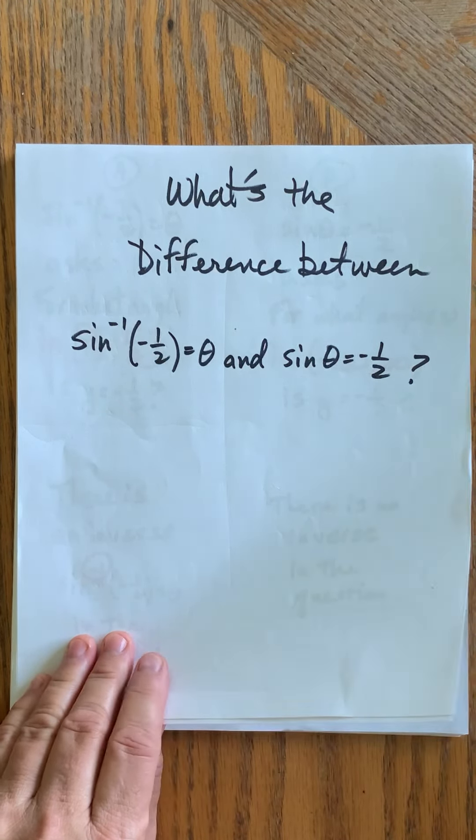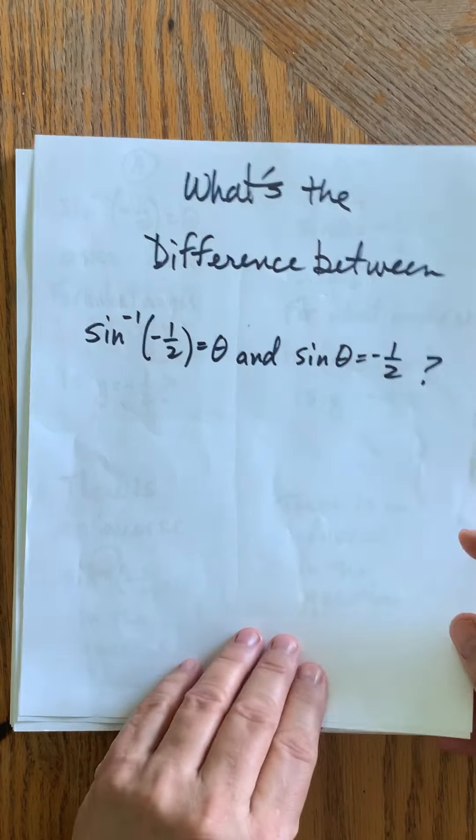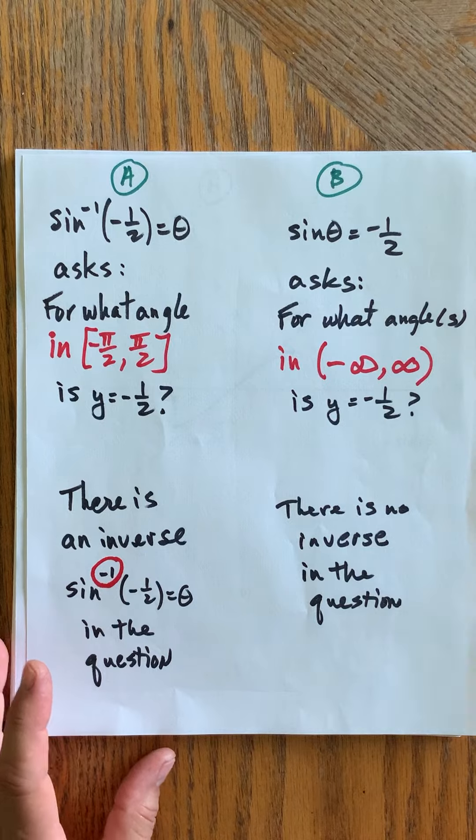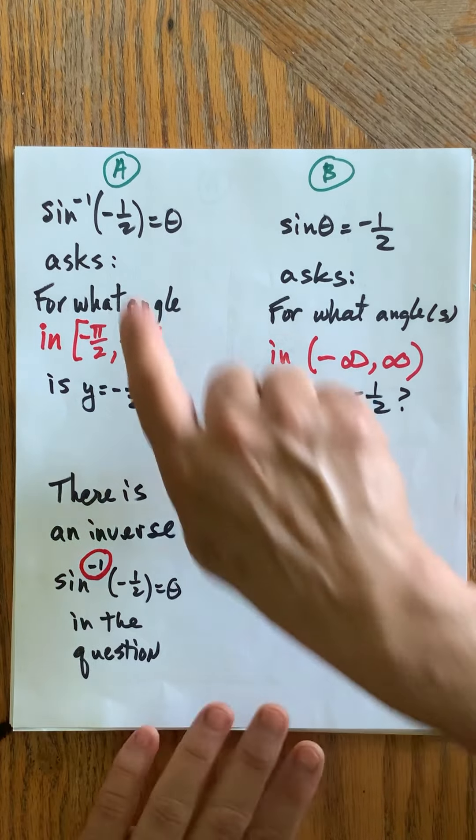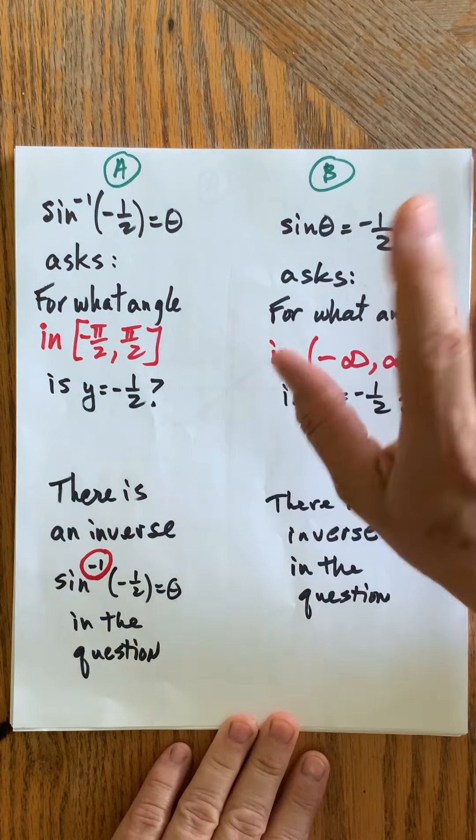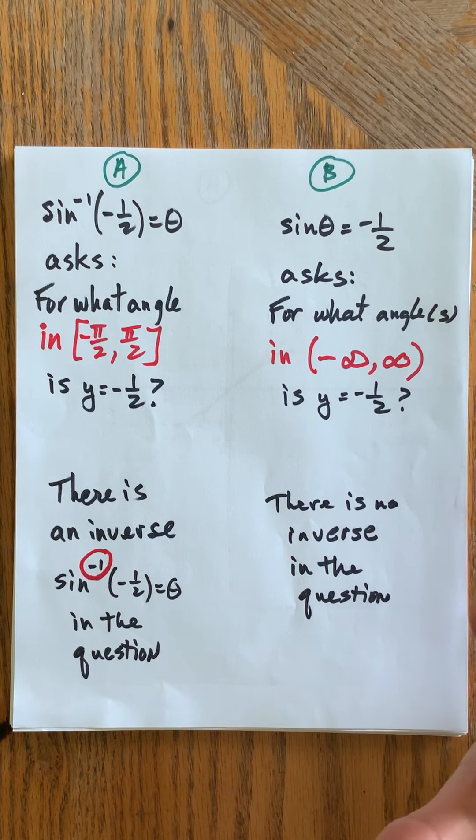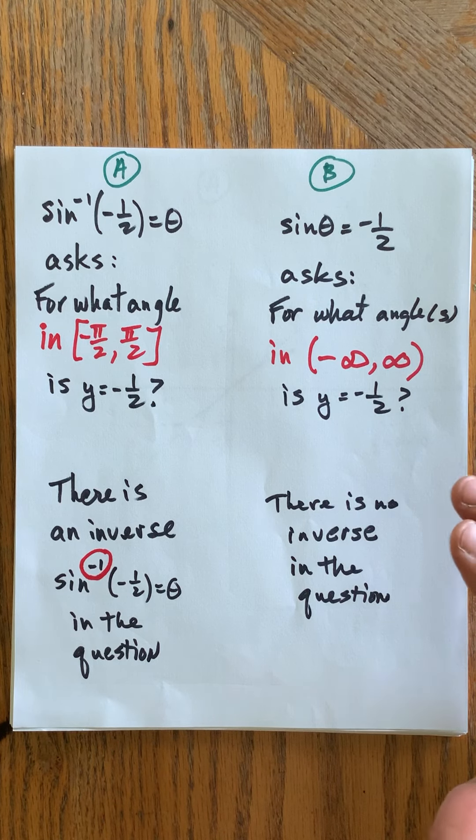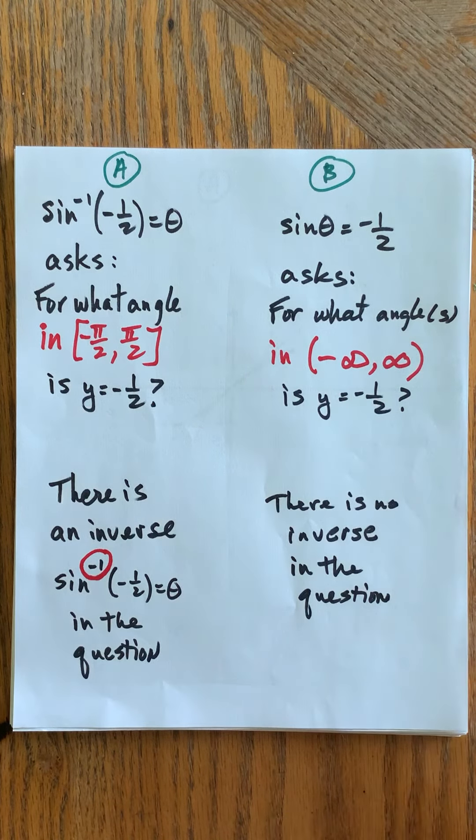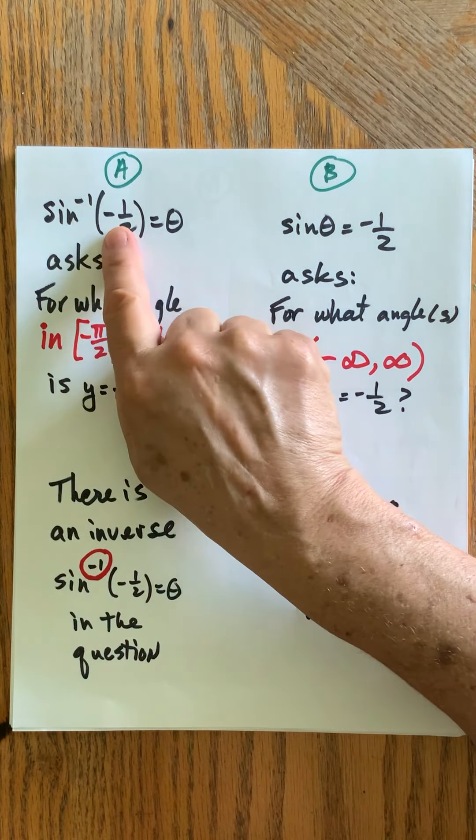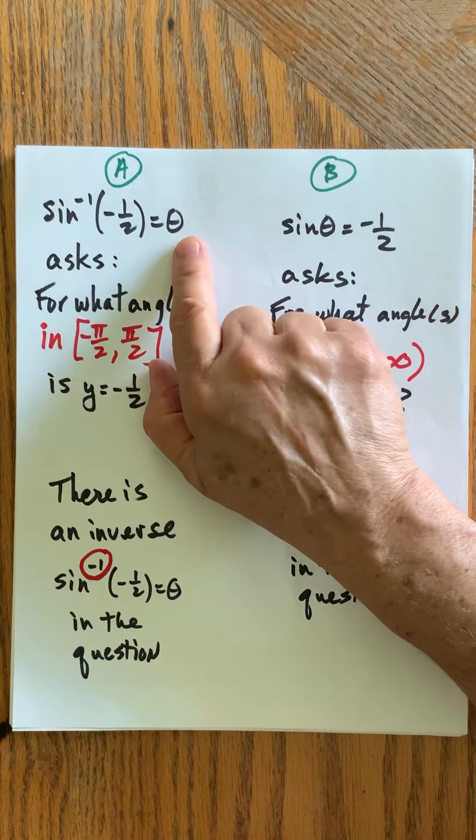So what is the difference? I'm labeling them A and B, so A is the inverse question and B is the equation. If you look back at the videos, when you're first introduced to inverses, I ask you to translate the question into a verbal sentence.